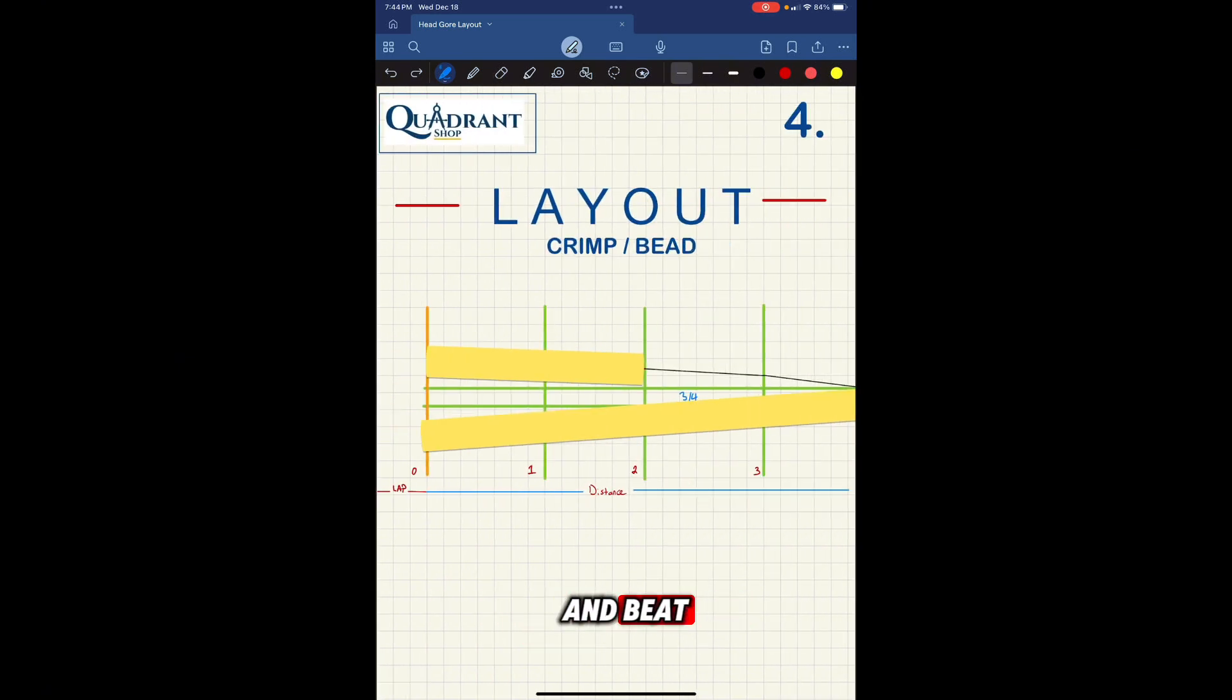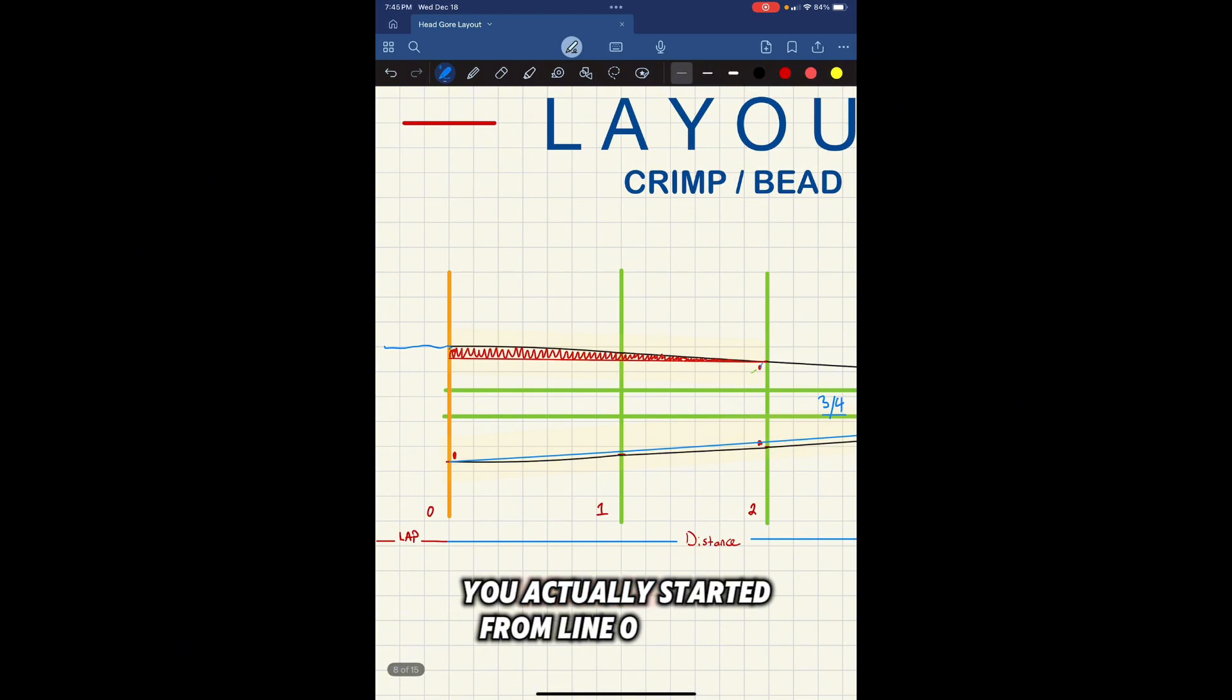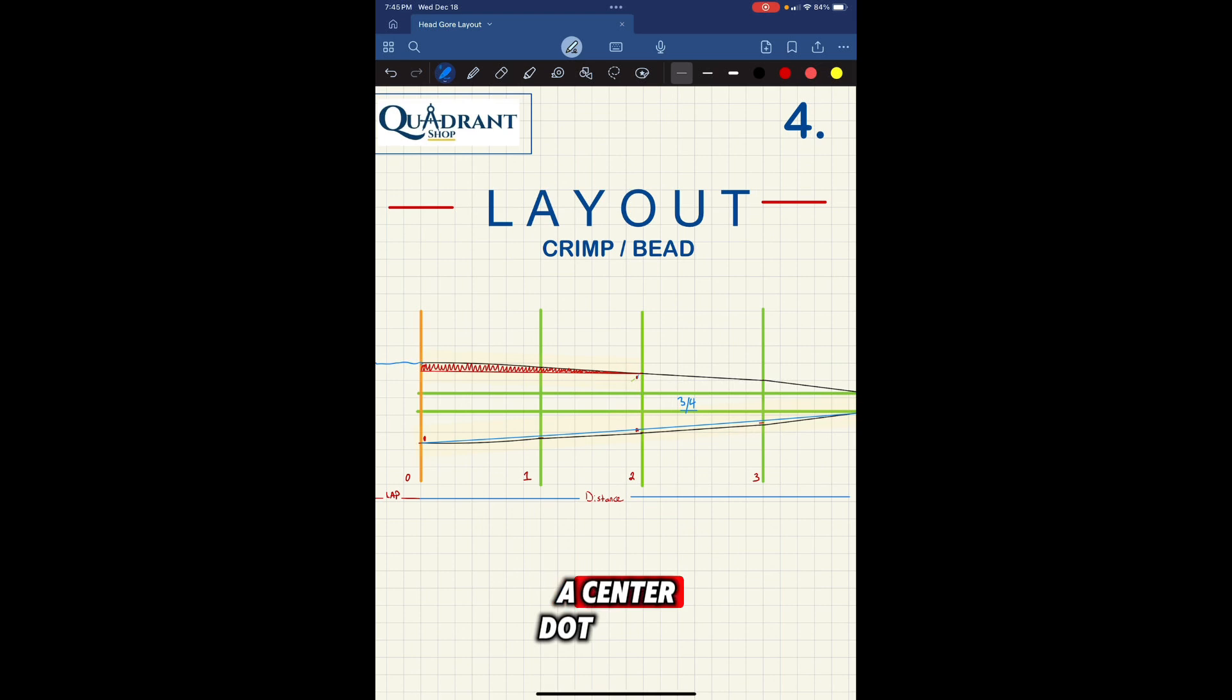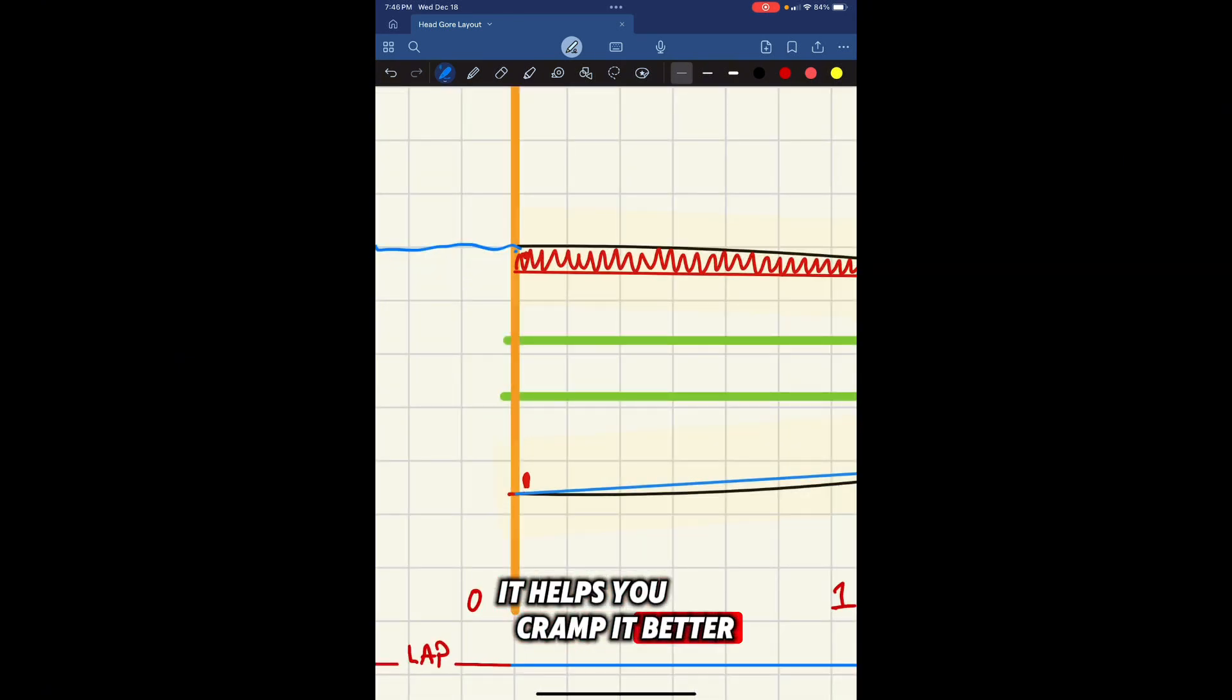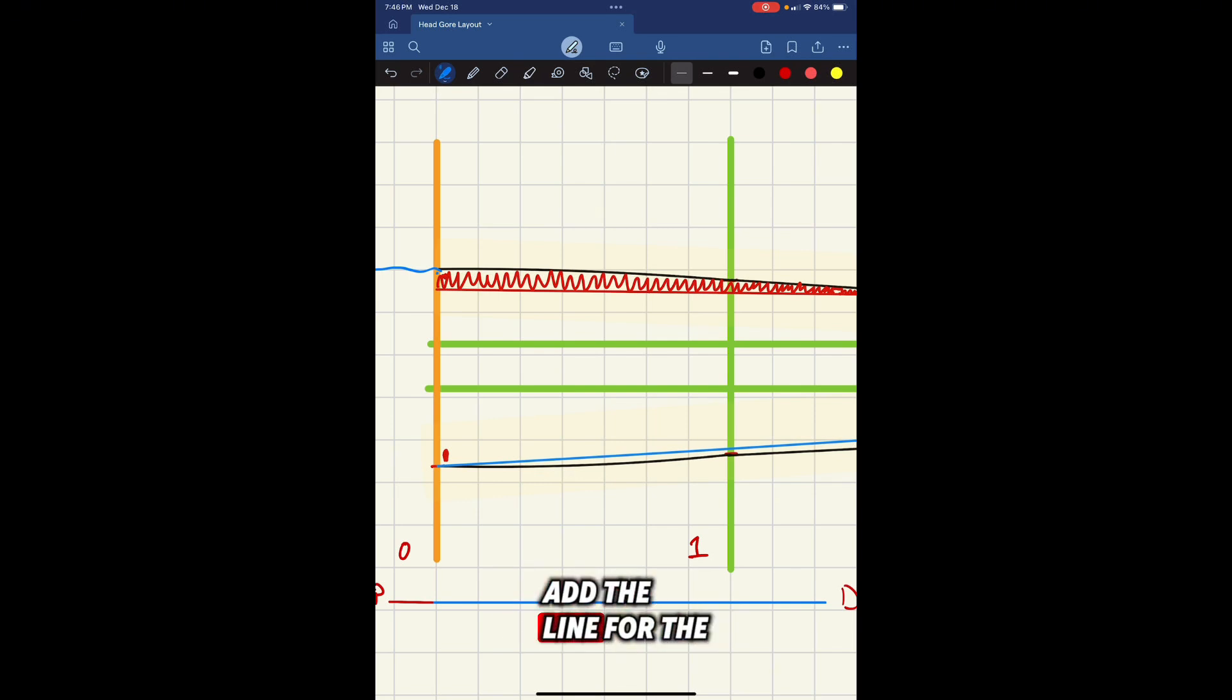Now, let's talk about the crimp and bead. You see how from line zero to line three, the bead starts and stops. That's how you need to put a center dot there. The center dot is going to show you where to start and finish a bead. Same thing you do with the crimp. You start it from line zero all the way to line four, but you still need to put a center dot so you know that's your dot as well. It helps you crimp it better and make sure all your gores are tight and uniform. Like I said, don't forget to add the line for the lap.